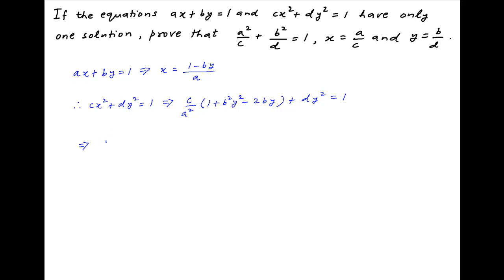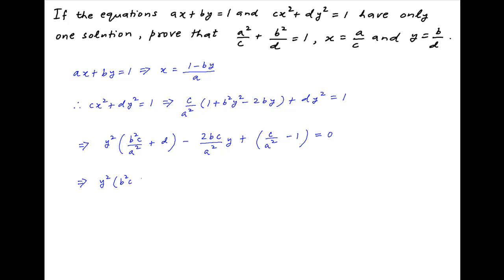This can be written as y squared times, in brackets, b squared c upon a squared plus d, minus 2bc upon a squared times y, plus c upon a squared minus 1 is equal to 0. Multiplying through by a squared, this becomes y squared times, in brackets, b squared c plus da squared, minus 2bcy plus c minus a squared is equal to 0.